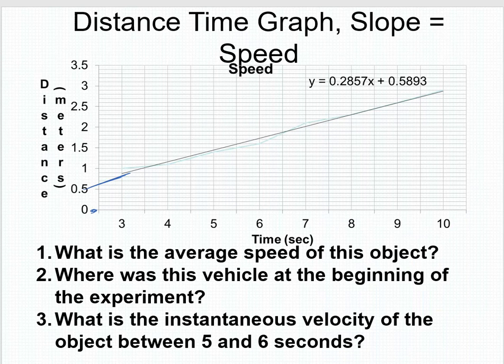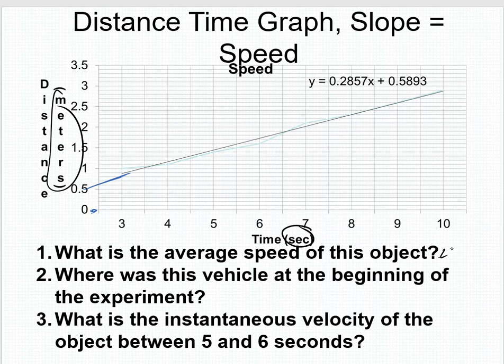Distance time graph, slope equals speed. In this case, what is the average speed of this object? I want to tell you that this is really easy. Up here, we have y equals mx plus b. So this right here is our slope. Slope is speed. So what is the average speed of this graph, this best fit line? The slope is the average speed. So the average speed here is 0.2857 meters per second.